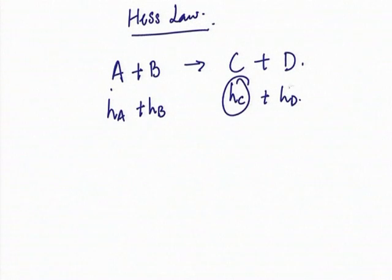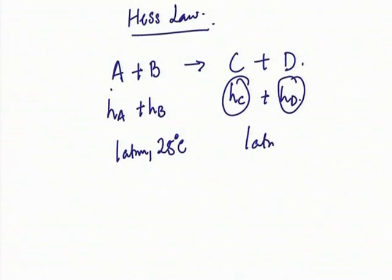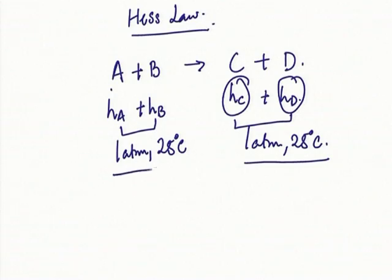If I calculate this at one atmosphere and 25°C — even though the actual combustion changes the temperature — I am supposed to bring the products back to the same temperature and pressure. What you will realize is that the net enthalpy of the reactants is not the same as the net enthalpy of the products at one atmosphere and 25°C — this is what is called normal temperature and pressure. If the products are at a lower enthalpy, it means you have actually released some amount of energy, which is what we use.